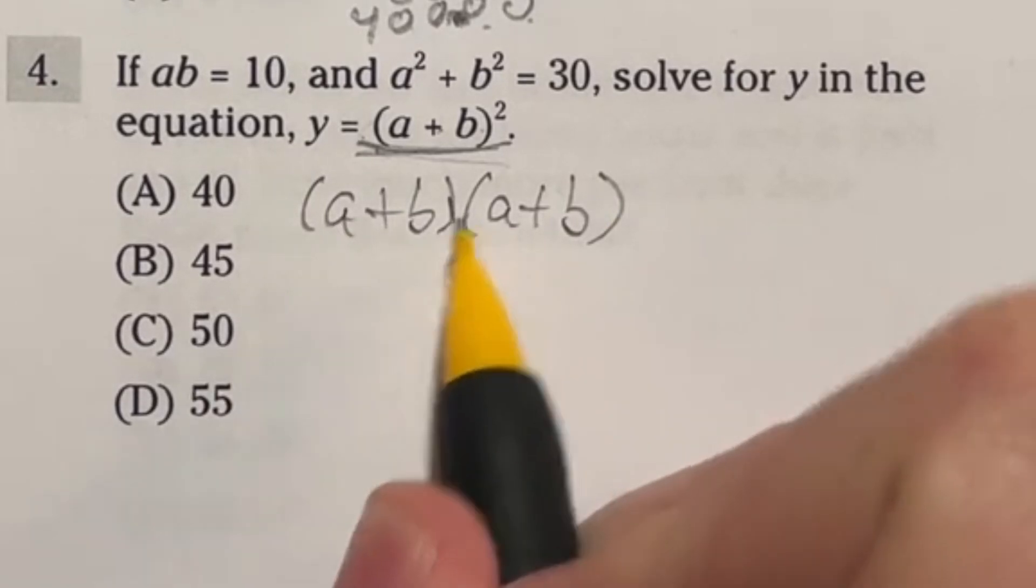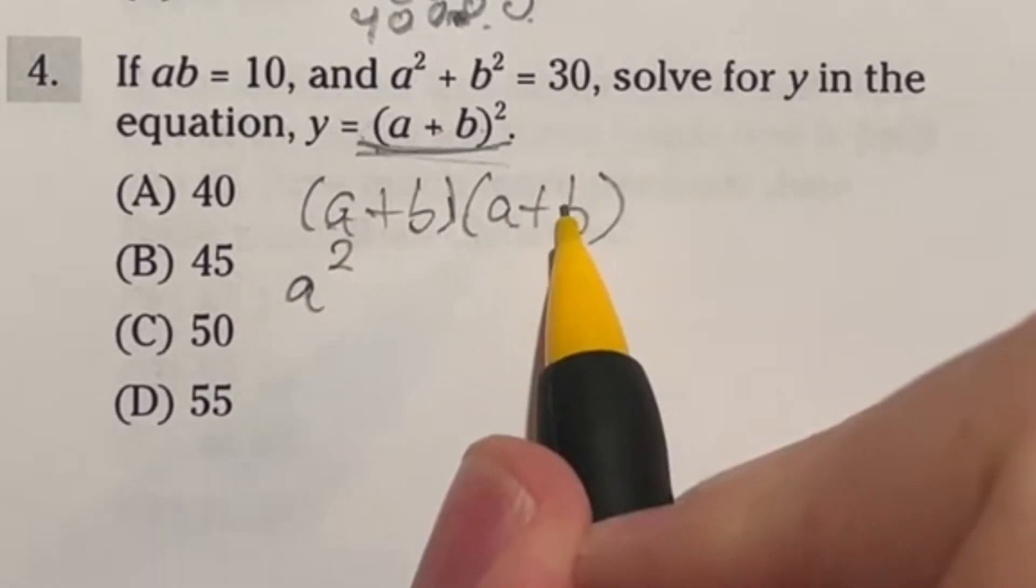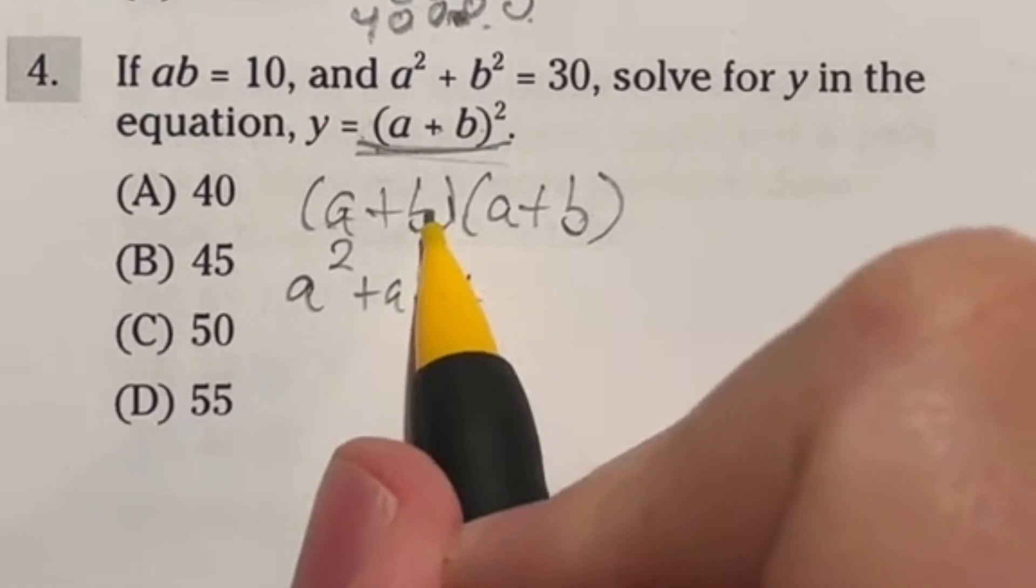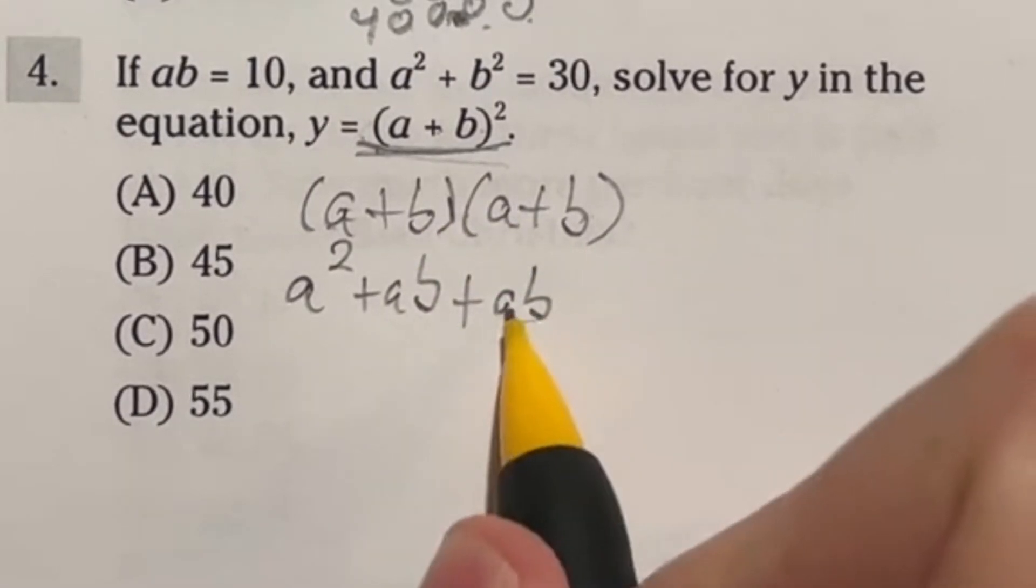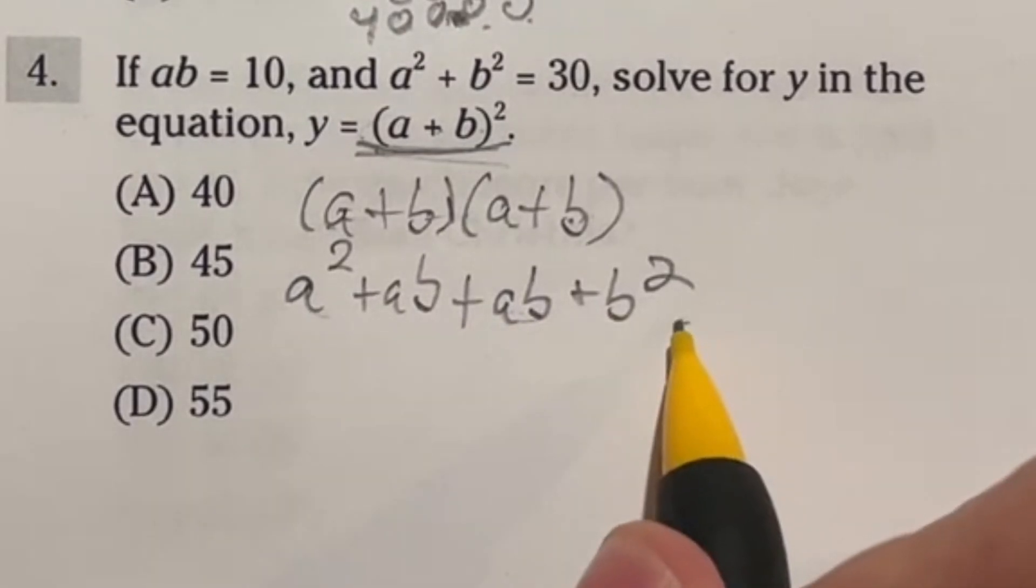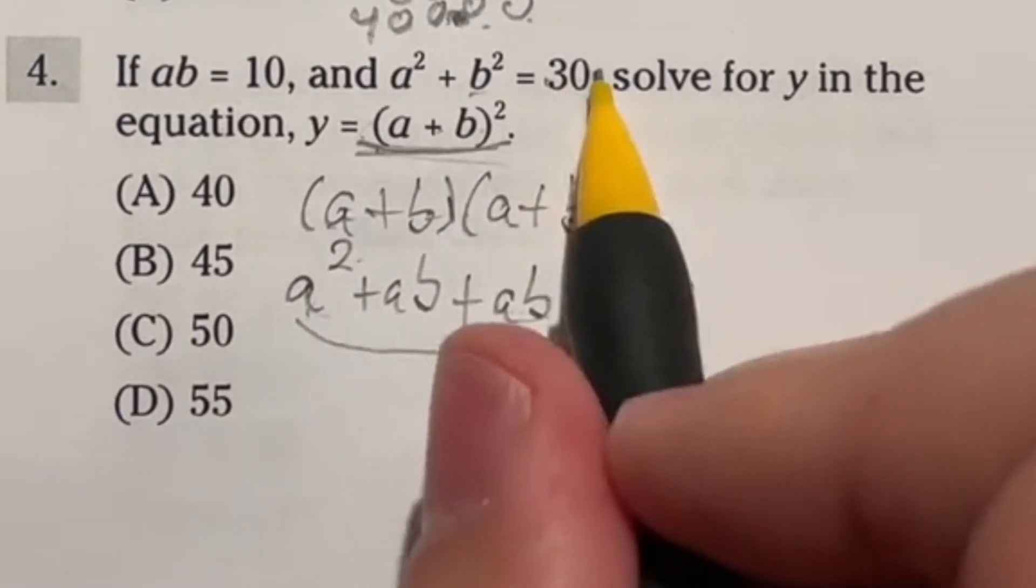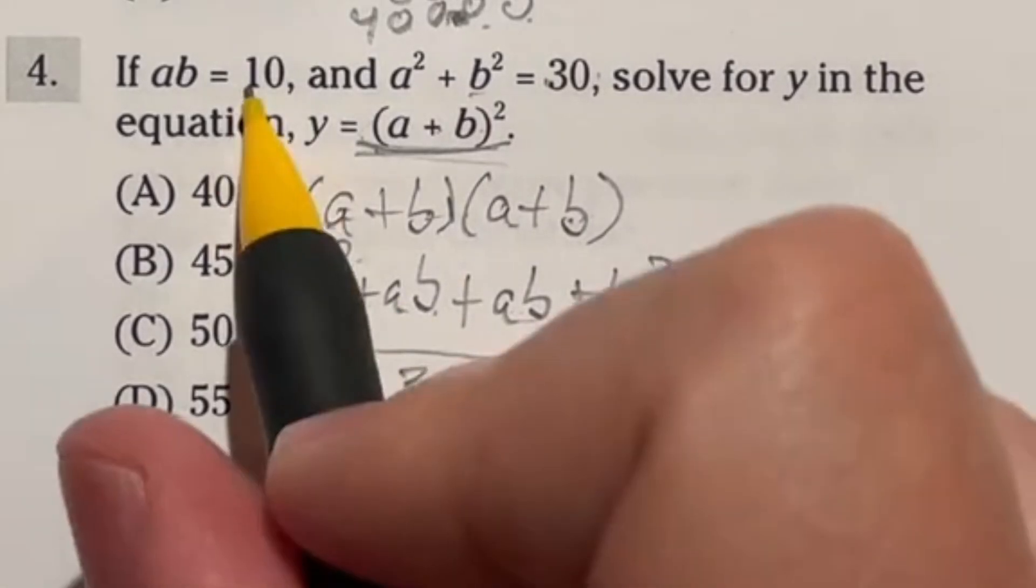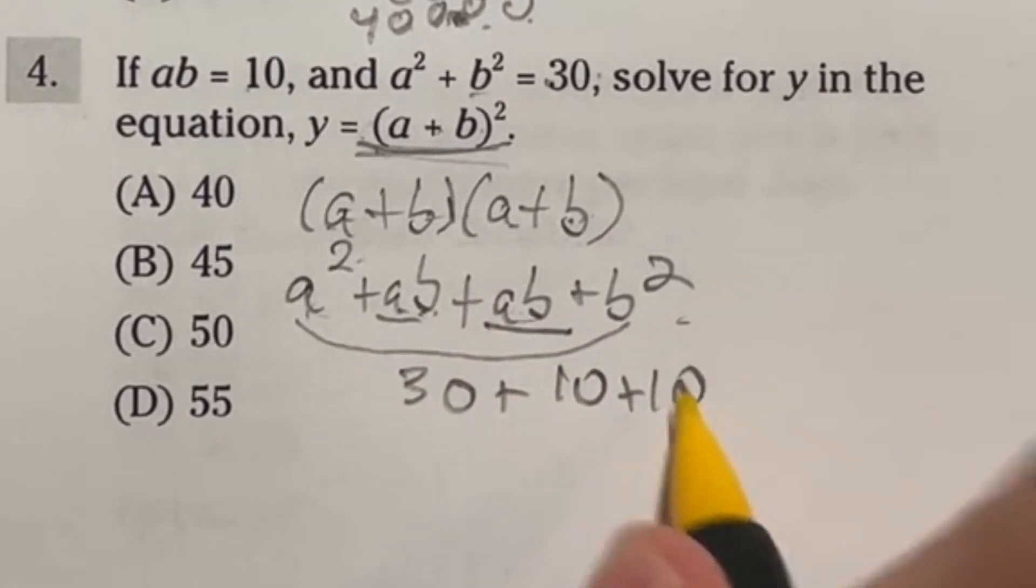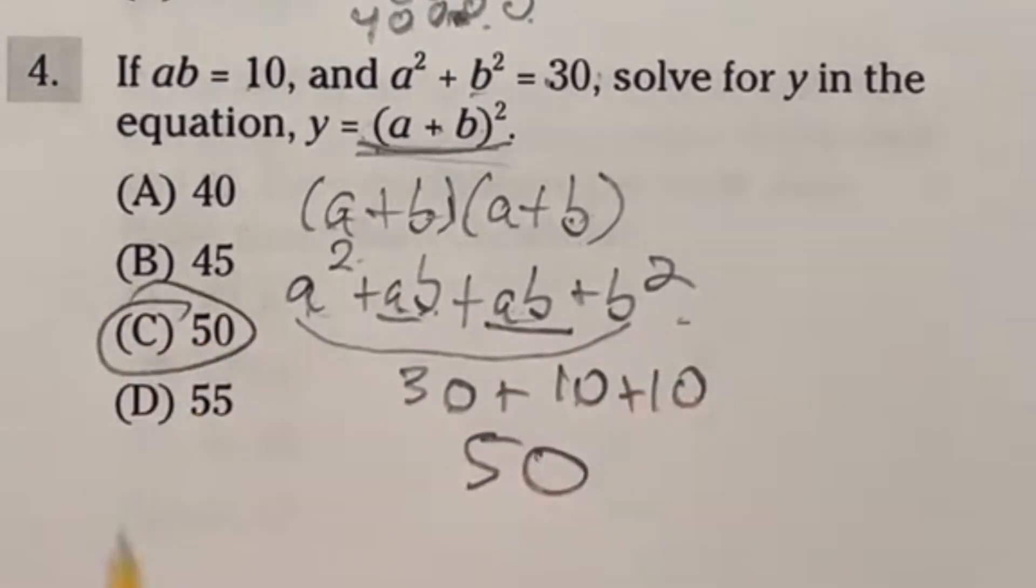Then we have first and last would be A times B so plus AB and then we would have B times A that's also AB because it doesn't matter which order commutative and then B times B which would be B squared. So all together this is what we get. Now here's the deal they gave us these two because A squared plus B squared is 30 and AB is 10. So we have 30 plus 10 plus another 10 right here. So our final answer is actually 30 plus 10 plus 10 which is 50. So we are looking at answer C.